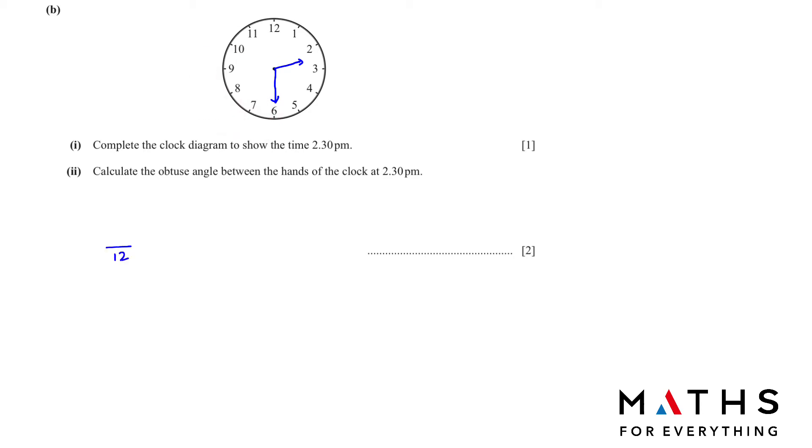In B2 we have to find the obtuse angle between the hands of the clock at 2:30 pm. This whole clock is divided into 12 parts. We are looking for this angle. Let's count how many parts there are: 1, 2, 3 and half. So 3.5 over 12 times 360 degrees. Put it in the calculator and you will get the answer 105.